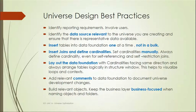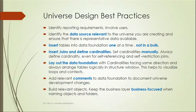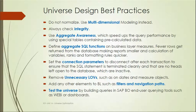Sometimes the tool automatically detects cardinalities but they may not be correct, so check them manually. Lay out the data foundation with cardinalities facing the same direction and arrange tables logically in the structure window to help visualize loops and context. Add relevant comments to data foundation tables and objects wherever possible to make later changes easier. Keep business layer naming business-focused rather than technical.